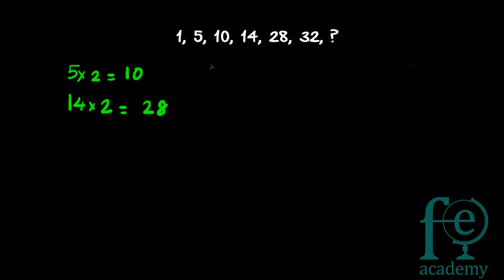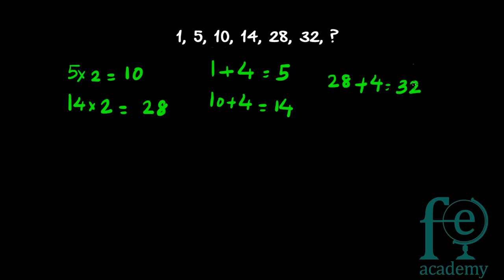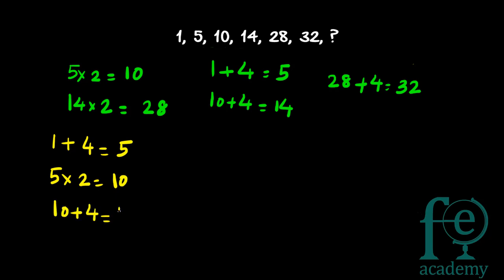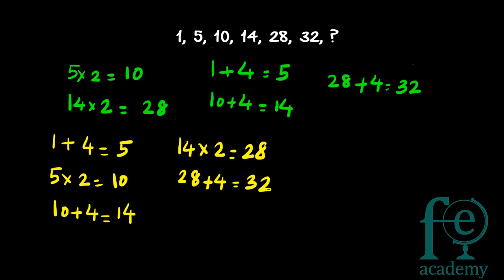So what is the difference between 1 and 5? 1 plus 4 is equal to 5. The same relation appears again: 10 plus 4 is equal to 14, and 28 plus 4 is equal to 32. So the full series pattern is: 1 plus 4 equals 5, then 5 into 2 equals 10, then 10 plus 4 equals 14, then 14 into 2 equals 28, then 28 plus 4 equals 32.